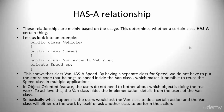There is also the has-a relationship. These relationships are mainly based on usage — this determines whether a certain class has a certain thing. For example, class Van has a Speed. By having a separate class for Speed, we do not have to put the entire code that belongs to Speed inside the Van class, which makes it possible to reuse the Speed class in multiple applications. In the object-oriented feature, the users do not need to bother about which object is doing the real work. The Van class hides the implementation details from the users of the Van class, so users would ask the Van class to do a certain action, and the Van class will either do the work by itself or ask another class to perform that action.